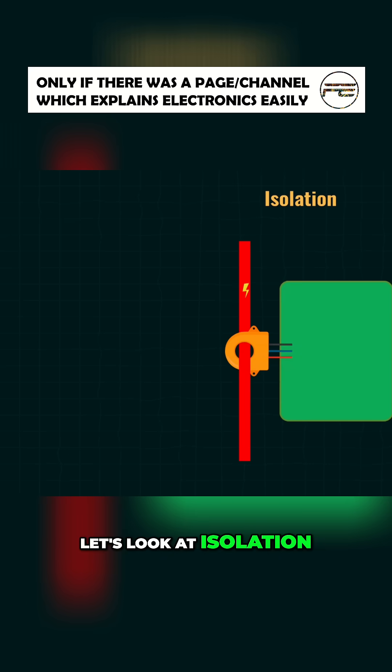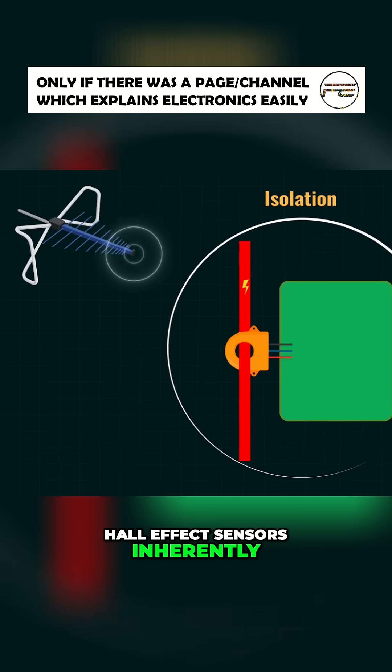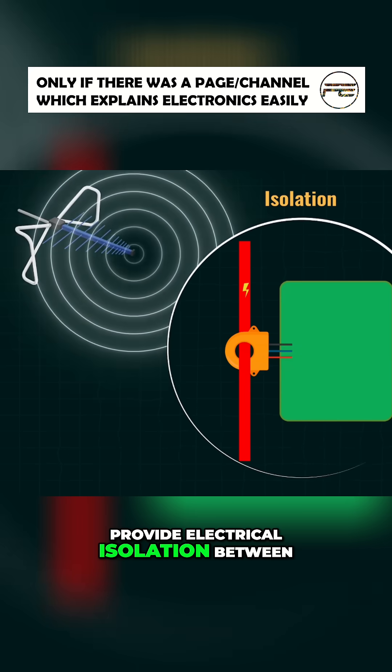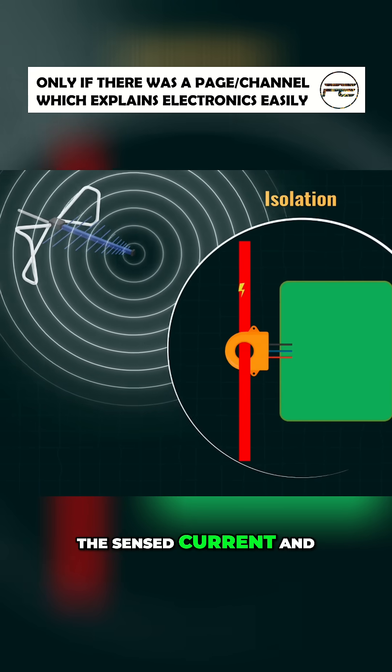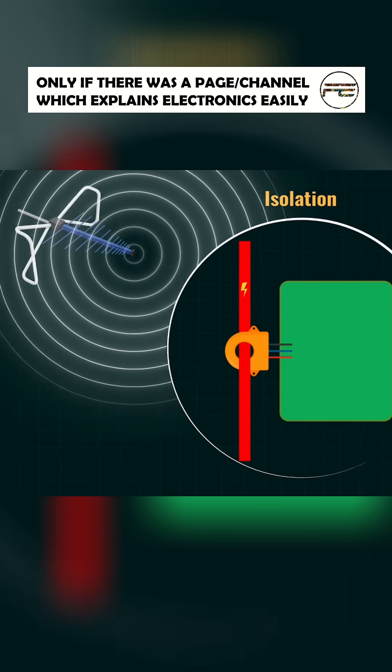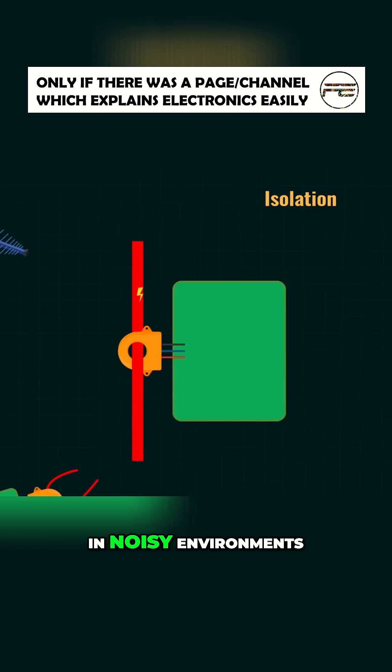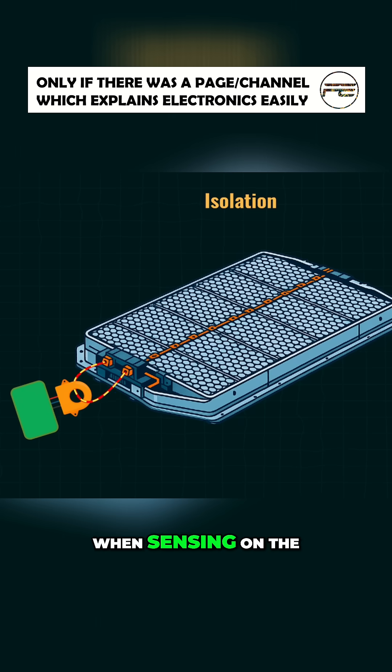Now let's look at isolation. Hall effect sensors inherently provide electrical isolation between the sensed current and the sensor output. This is extremely useful in noisy environments or when sensing on the high voltage side of a battery system.